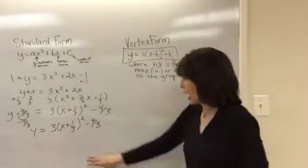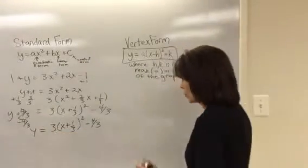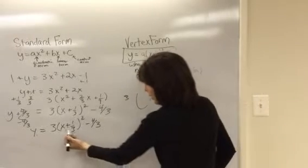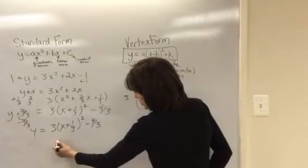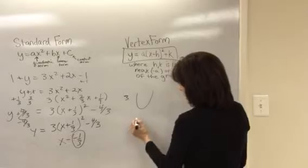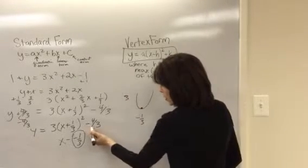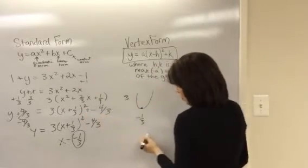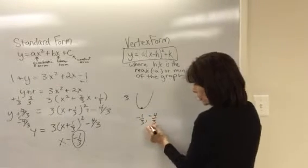Now I can look at this now and see that I have a graph that will open upward because of the three which is a positive value. And then I know my vertex is, if I rewrite this as x minus a minus one third, then I know negative one third is my x coordinate for the vertex, and I know that since I have plus k that plus a minus four thirds, minus four thirds will be my y coordinate.